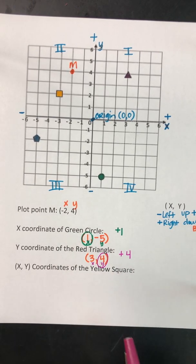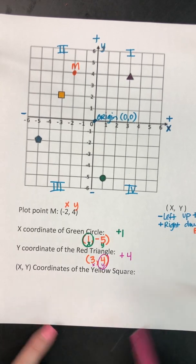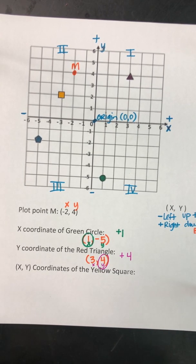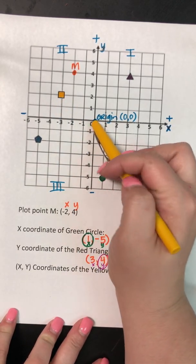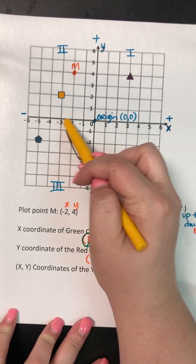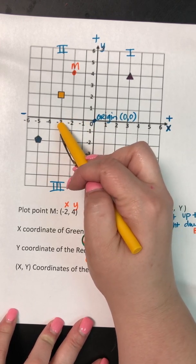And then the last one wants the x, y-coordinates of the yellow square. So we're gonna go to our yellow square. And we're gonna say, okay, I start at my origin. And I'm gonna walk 1, 2, 3. And that is a negative 3, because we went to the left.